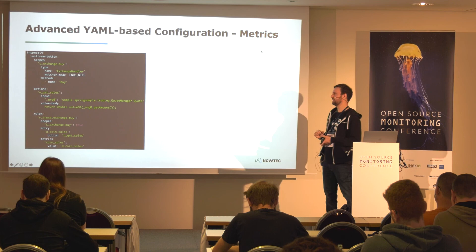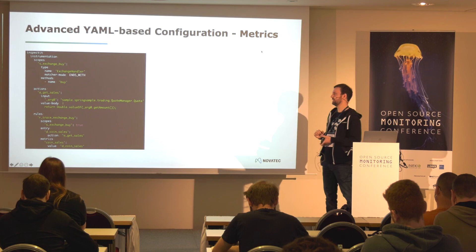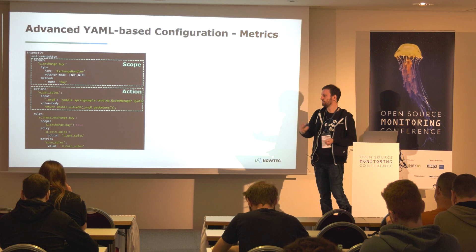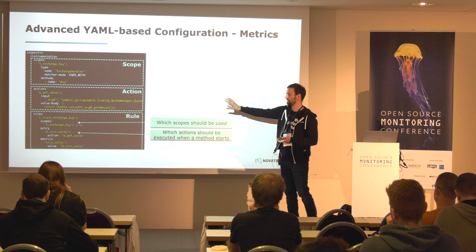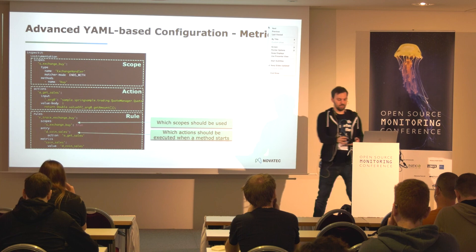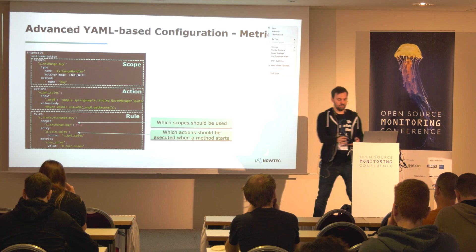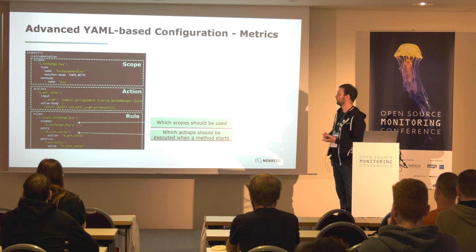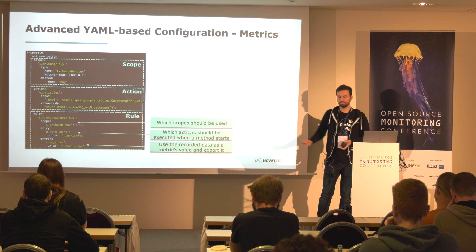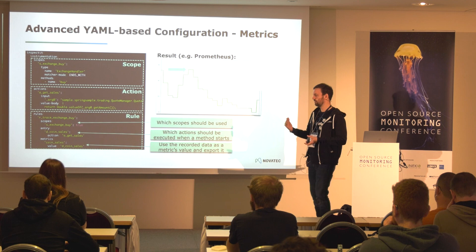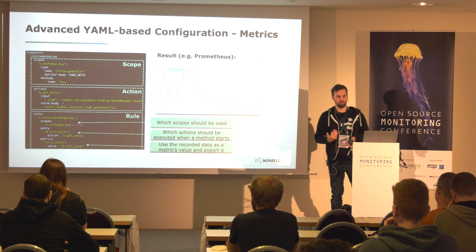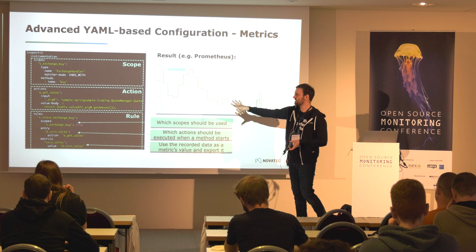The same can be done for metrics. We again define scopes and actions — some Java code to extract data — and in the rule we specify a scope and execute actions each time one of those methods starts. But this time, instead of adding the data to a trace, we export it as a metric value. Using the available exporters in OpenTelemetry, we can, for example, expose these collected metrics as a Prometheus endpoint scraped by Prometheus.